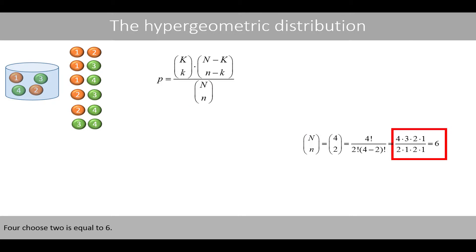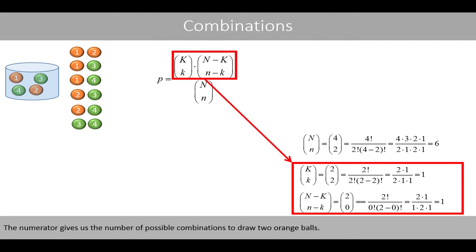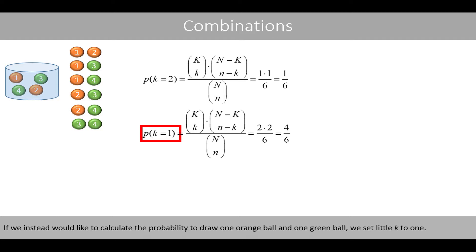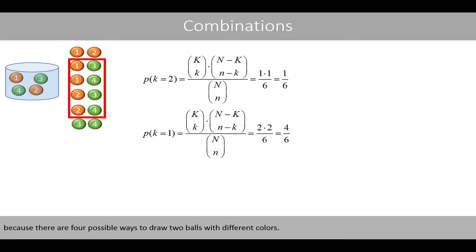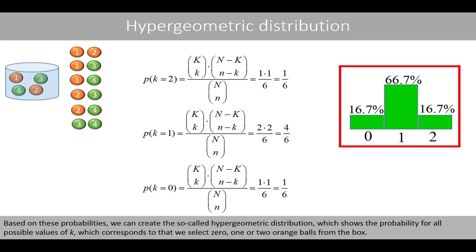Let's plug in our numbers. 4 choose 2 is equal to 6, so the denominator tells us the number of combinations that are possible. The numerator gives us the number of possible combinations to draw 2 orange balls. We see that the probability to draw 2 orange balls is 1 over 6. If we instead calculate the probability to draw 1 orange ball and 1 green ball, we set little k to 1, and the probability is 4 over 6 — reasonable because there are 4 possible ways to draw 2 balls with different colors. Based on these probabilities, we can create the hypergeometric distribution, showing the probability for all values of k: selecting 0, 1, or 2 orange balls.